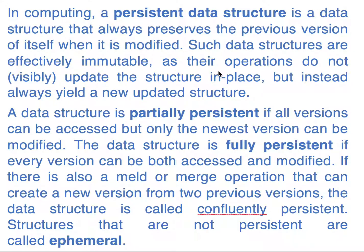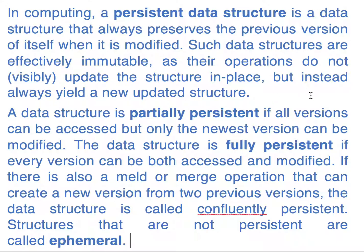So let's say there is a variable x, we modify it into x1, then we modify it from x1 to x2 — x1 is still there but we have created a new value x2. Such data structures are effectively immutable. x1 can't be changed; we have to create a new x2 because operations do not visibly update the structure in place. x1 is not overwritten by x2, and if we want to create x3, we have to create a new version of it.